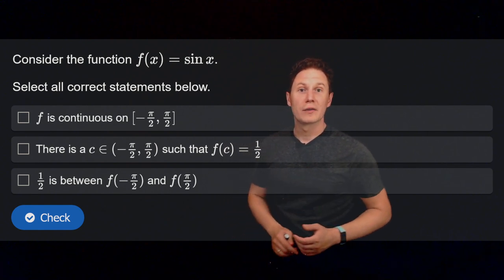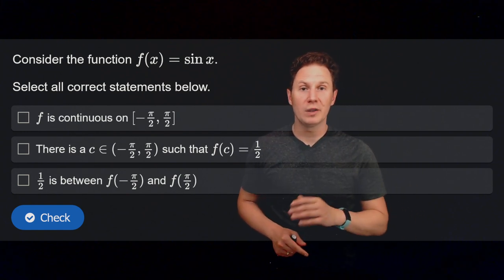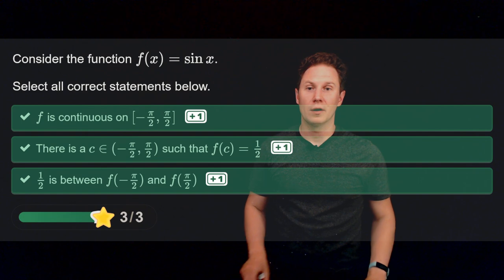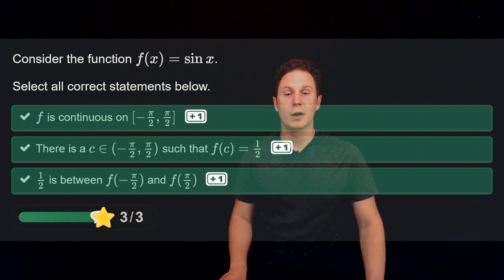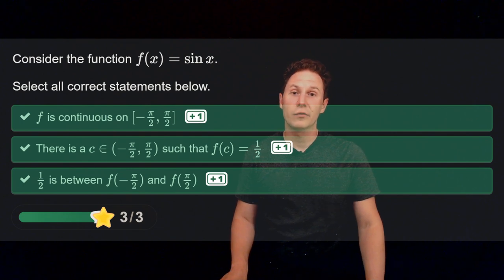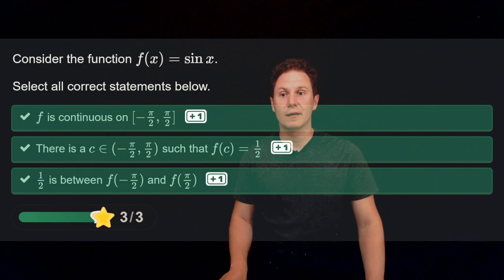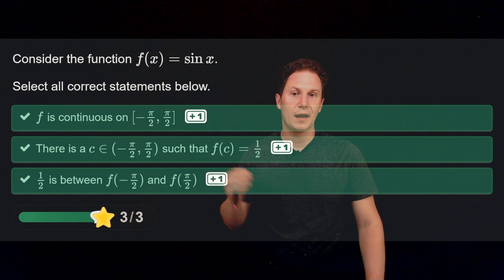Consider the function f(x) = sin(x) and select all correct statements. The sine function is continuous on [-π/2, π/2]. There exists a number in that interval at which the sine function takes on the value 1/2 — this is at x = π/6. And indeed 1/2 is an intermediate value, since it lies between the endpoint values of -1 and +1. All statements are correct.